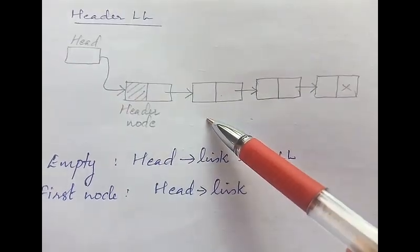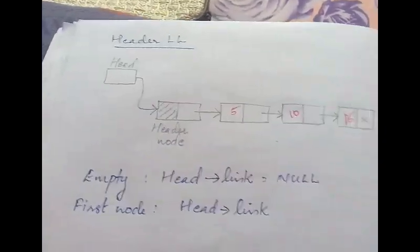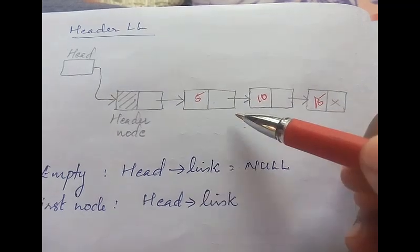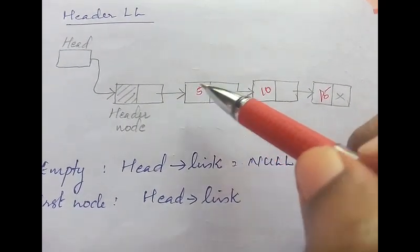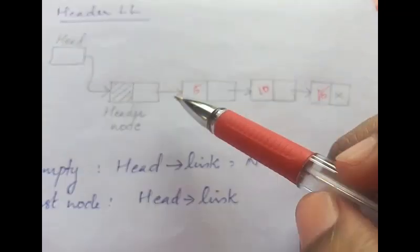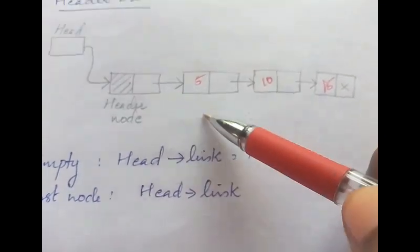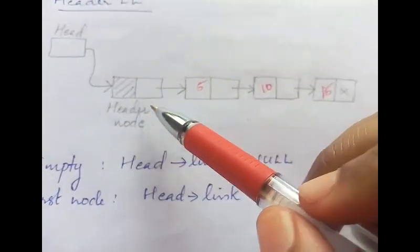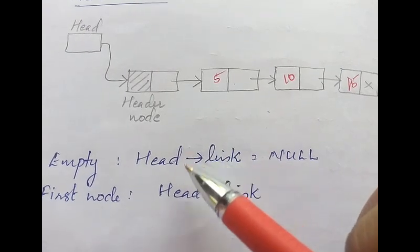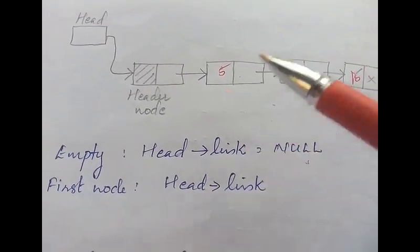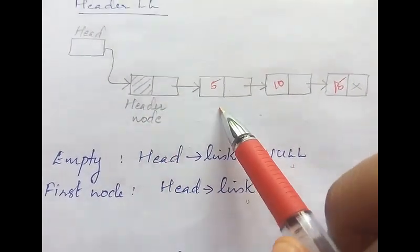The data values are stored from the second node onwards. A header linked list is empty only if the second node is empty — that is, if head's link is null. If this is the head node, then head's link means the second node next to the head node. So the header linked list is empty if head's link equals null, and the first node which has a value is head's link.